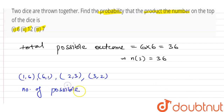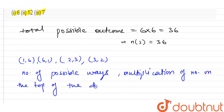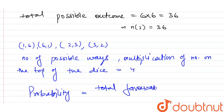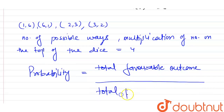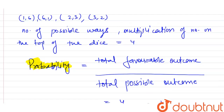The number of possible ways such that the product of the numbers on the top of the dice equals 6 is 4. We know that probability equals total favorable outcomes divided by total possible outcomes. Here, favorable outcomes = 4 and total possible outcomes = 36, so the probability equals 4/36, which simplifies to 1/9.